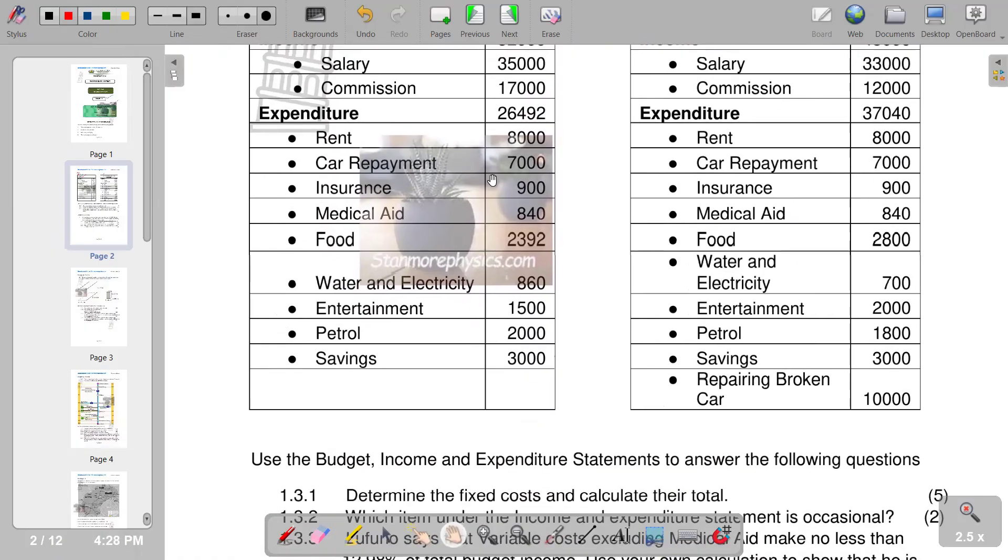Fixed costs are those costs that do not change from period to period. If you look at the information given, you would see that rent doesn't change from one period to the other, it remains the same. We also have car repayment as a fixed cost and also insurance as a fixed cost.